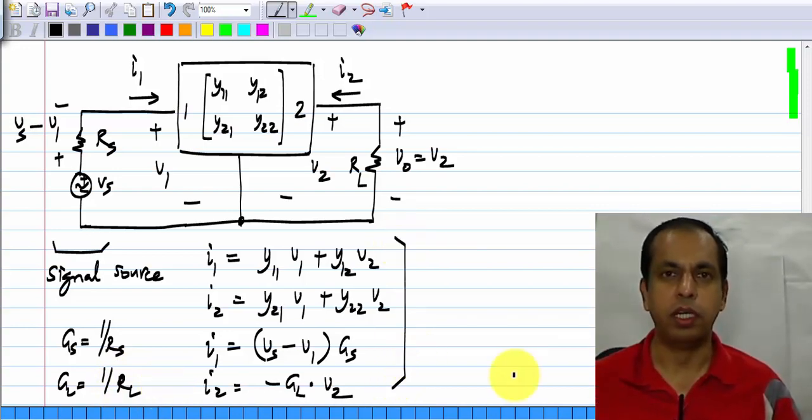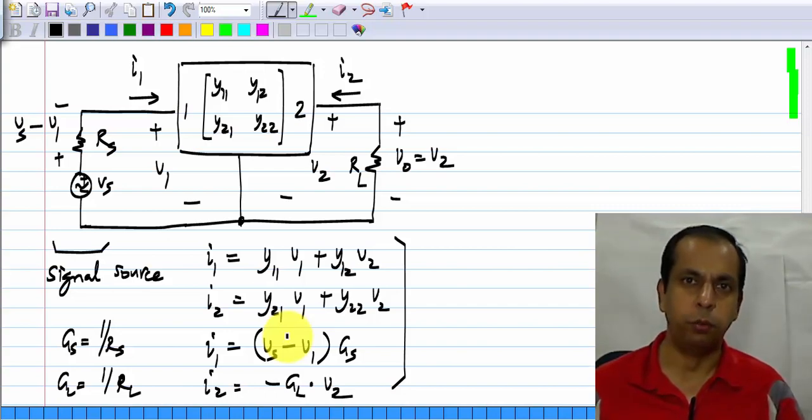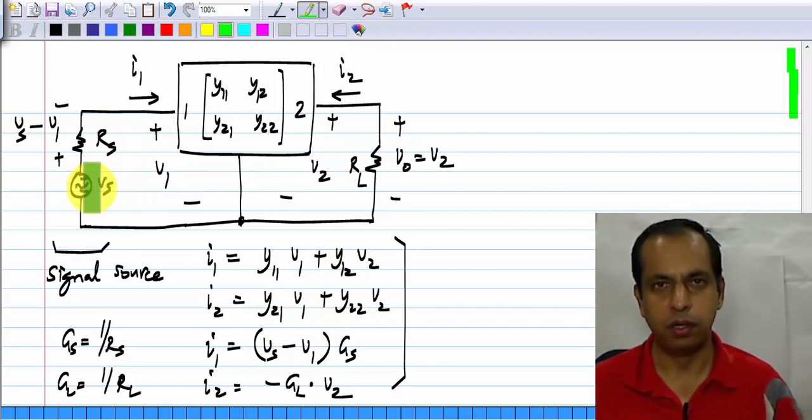Now we have these four equations and we have four variables. We have to solve for I1, V1, I2, and V2, and it is specifically V2 that we are interested in. We have to find the relationship between V2 and the source voltage Vs.